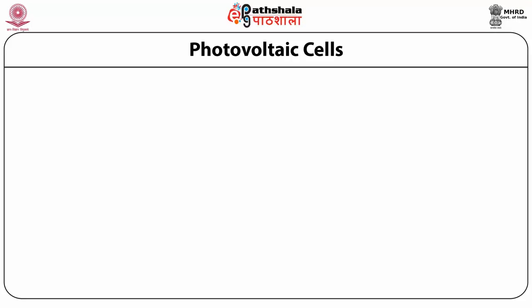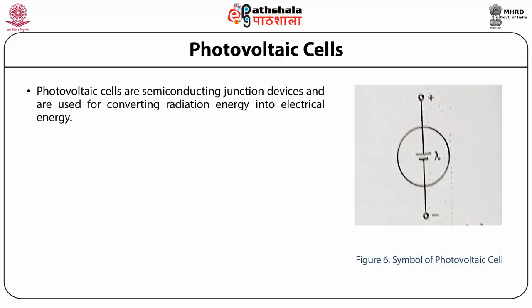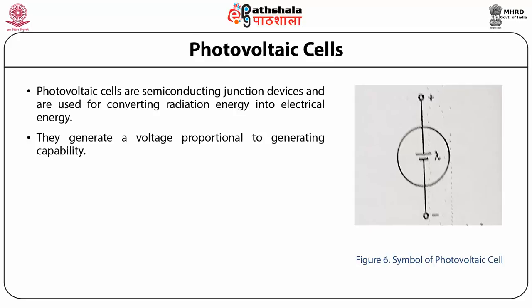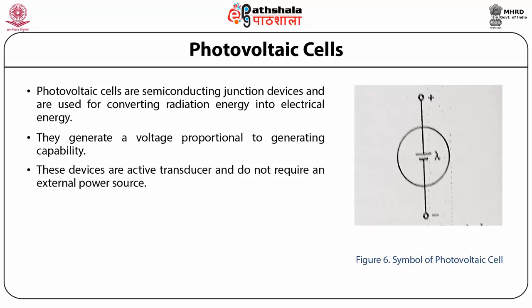Photovoltaic cells are semiconducting junction devices used for converting radiation energy into electrical energy. They generate a voltage proportional to electromagnetic radiation intensity. Due to their voltage-generating capability, these devices are active transducers and do not require an external power source.